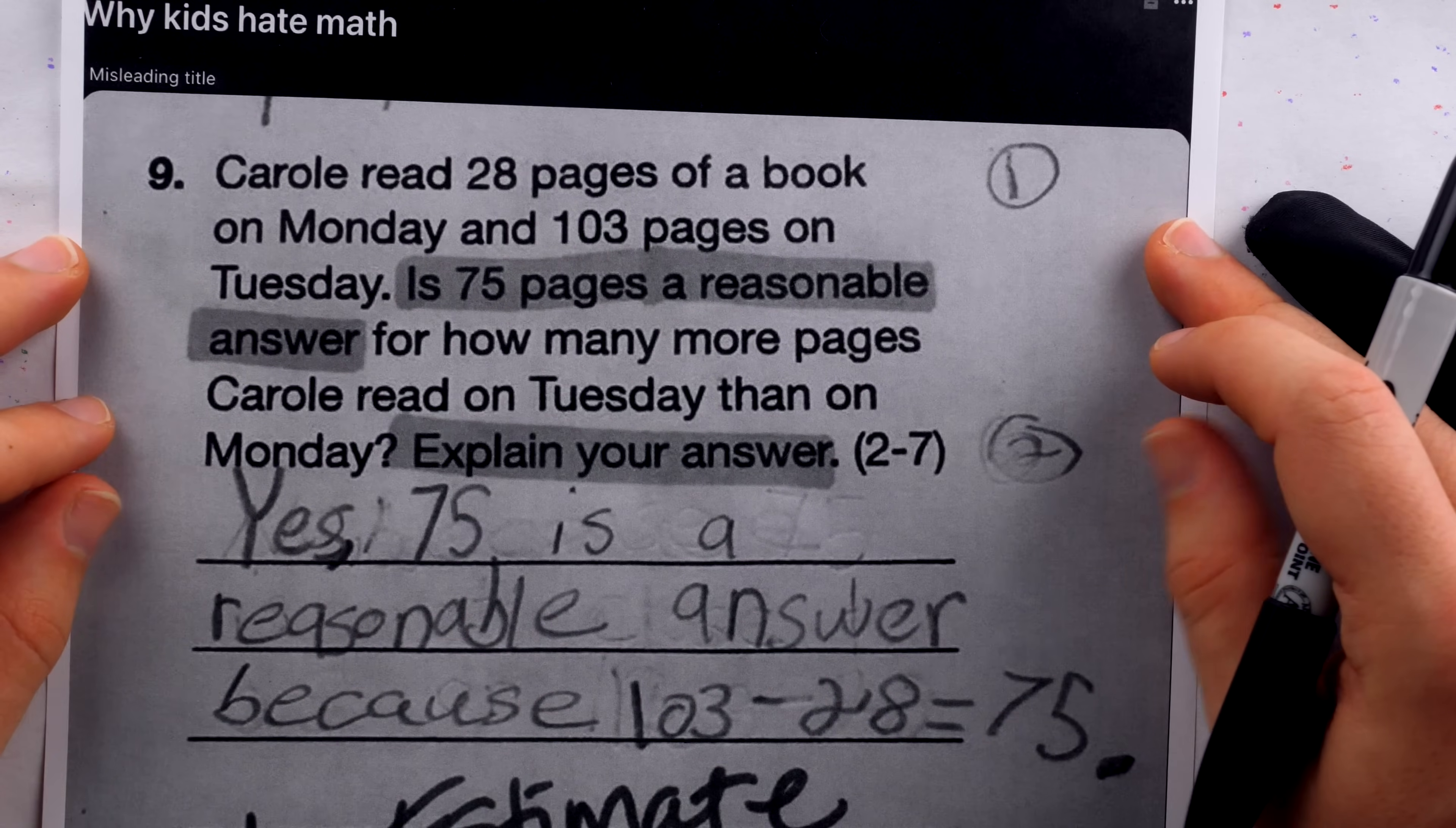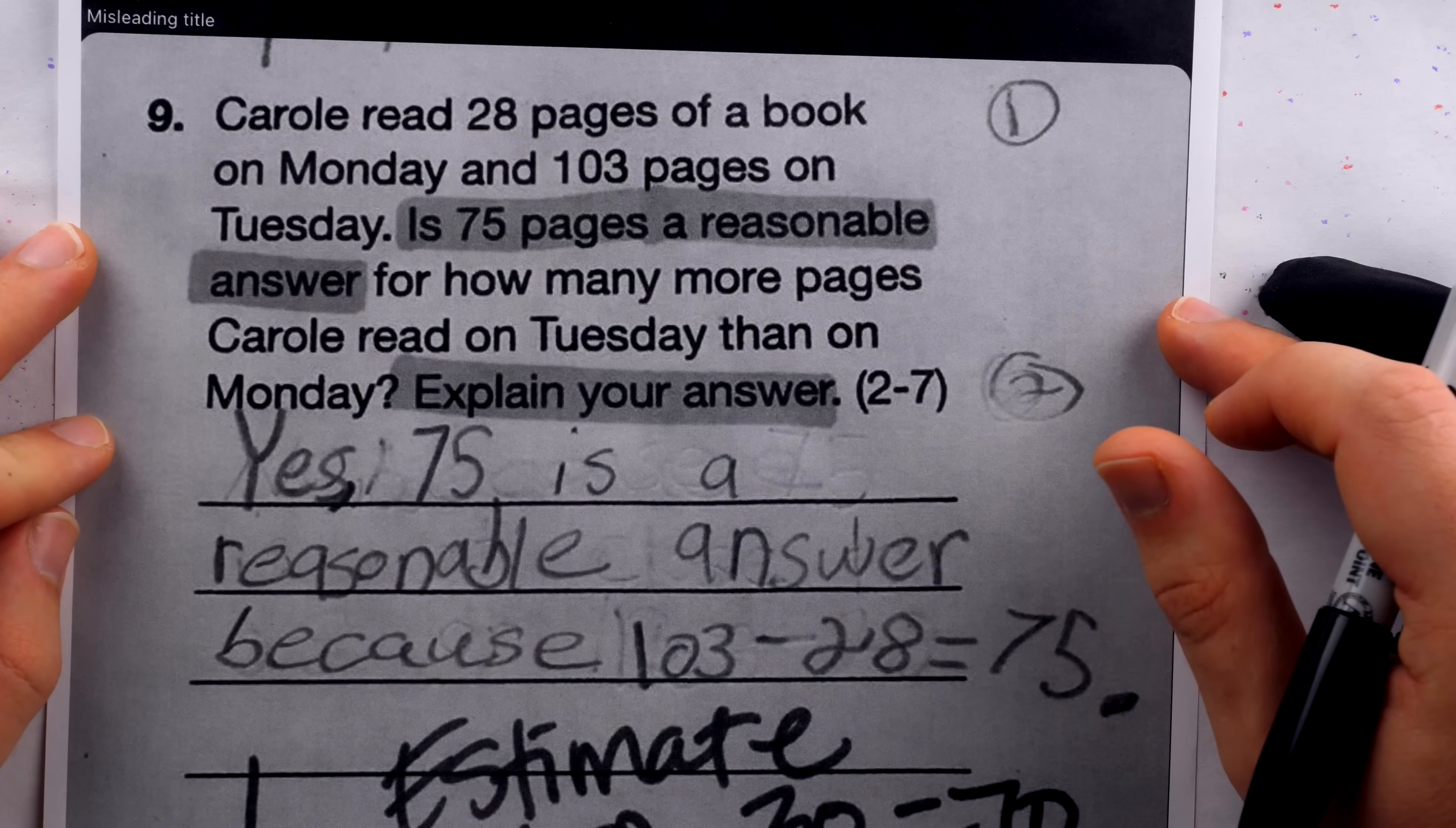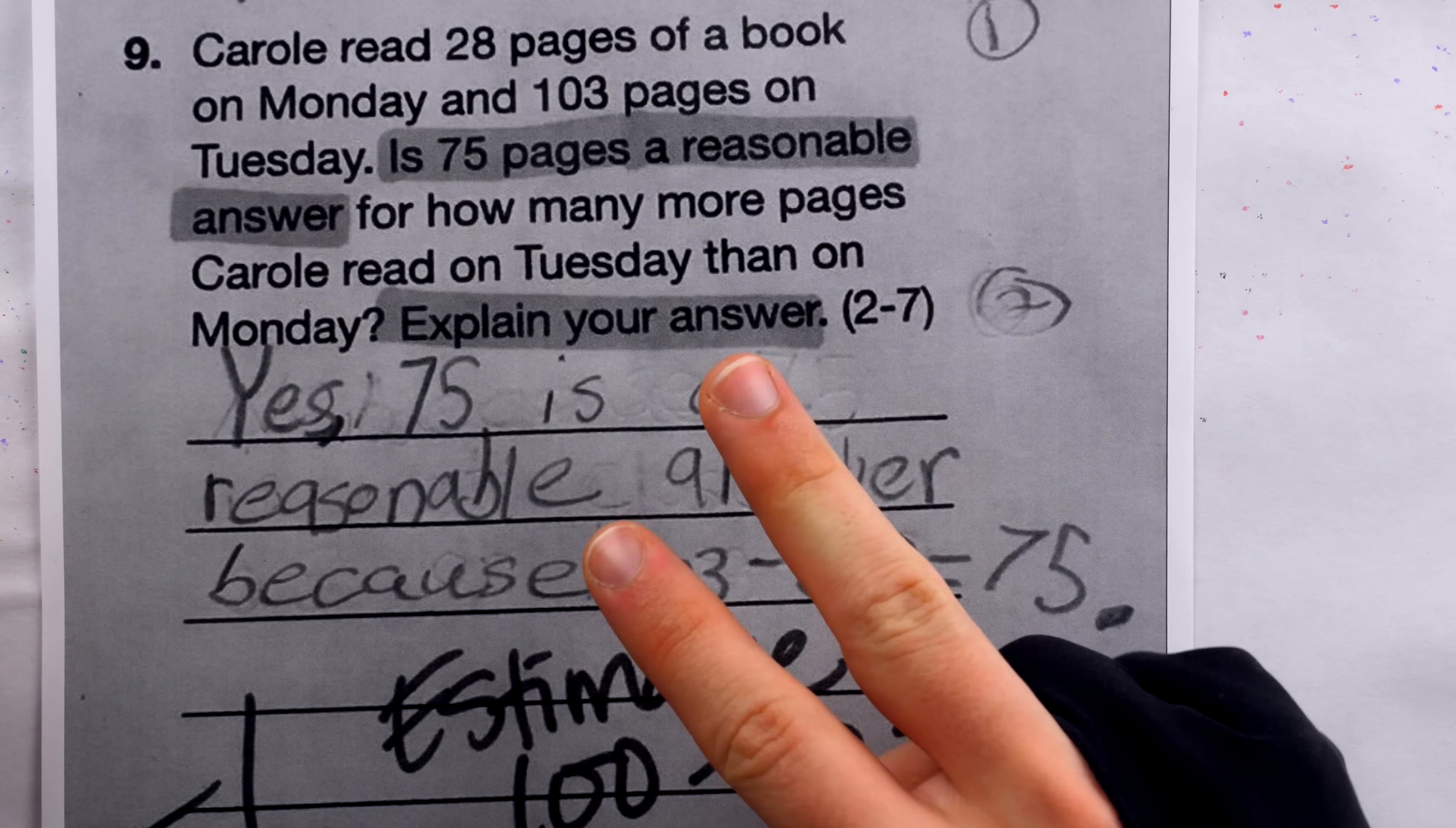Now, if we give some benefit of the doubt, there's a couple things we could think here. For one, who knows how many points the question is worth? Perhaps it's worth 10 points and this minus one is very little. It's probably more likely that the question is worth somewhere between one to three points and they've lost half or a third credit. If I were grading this question, I would grade it out of two points. I would be looking for sound reasoning and consistency.